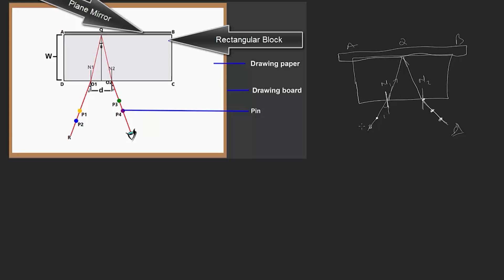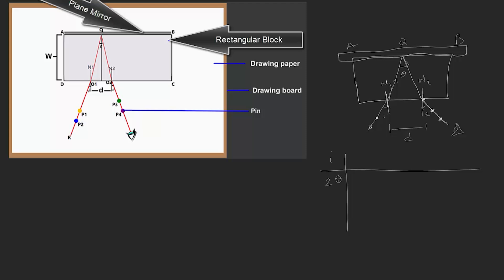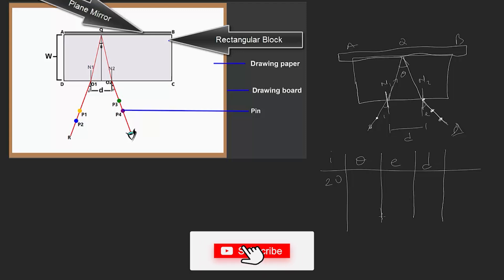So what are the quantities you are going to measure? You are going to measure theta, you are going to measure E — that's the angle that emerges — and you are going to measure the distance between N1 and N2, marked as D. This is how your table of readings will look like, with the angle of incidence, say 20 degrees.